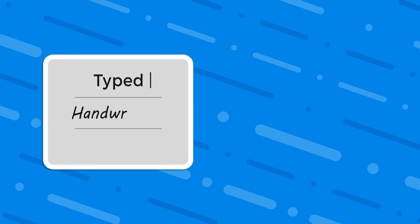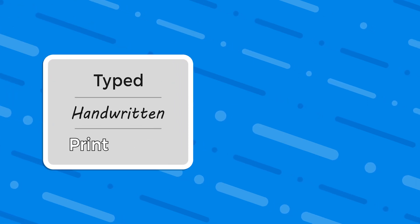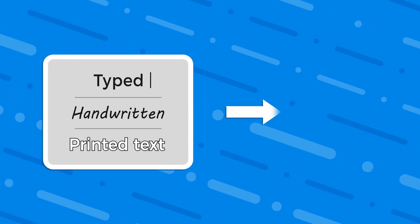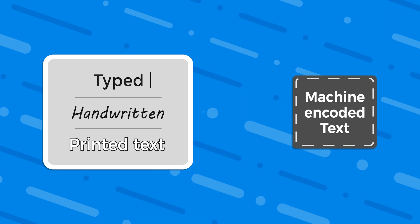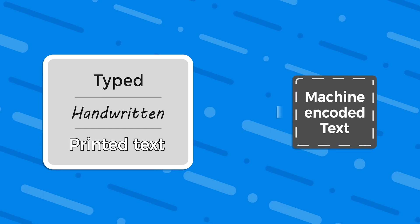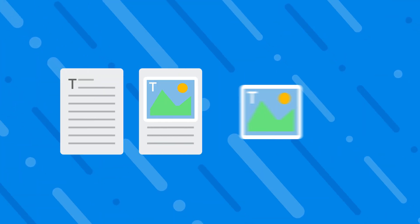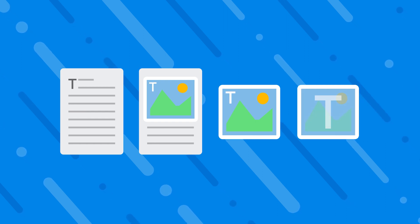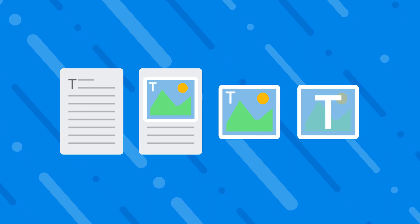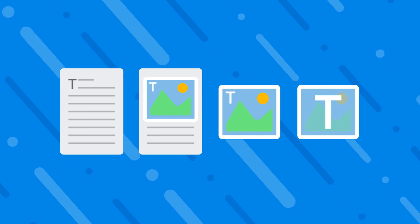OCR is the electronic or mechanical conversion of images of typed, handwritten, or printed text into machine-encoded text. Whether from a scanned document, a photo of a document, a scene photo, or subtitled text superimposed on an image.